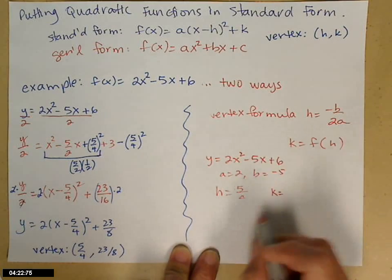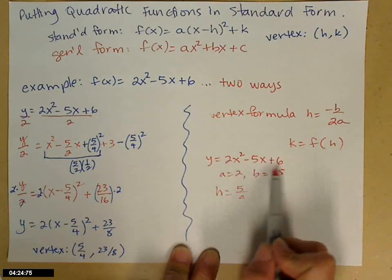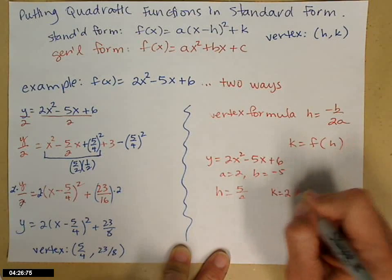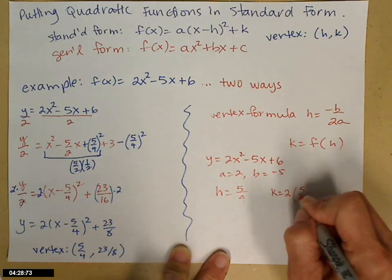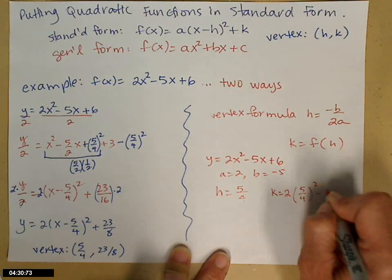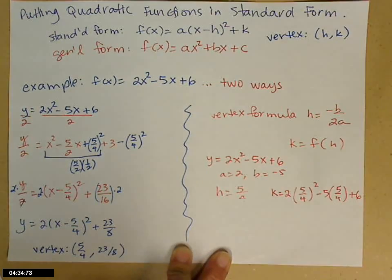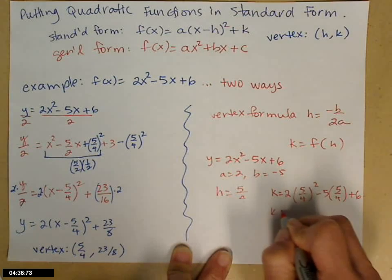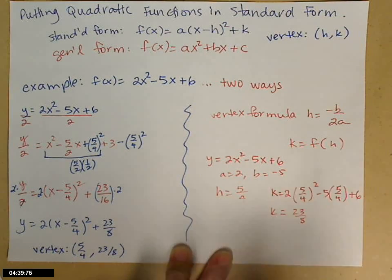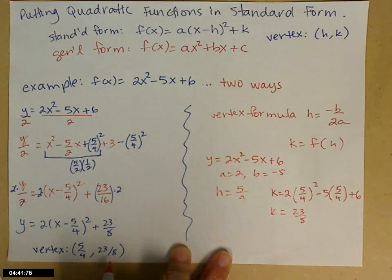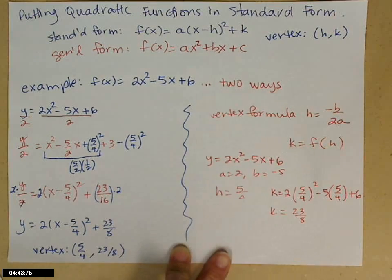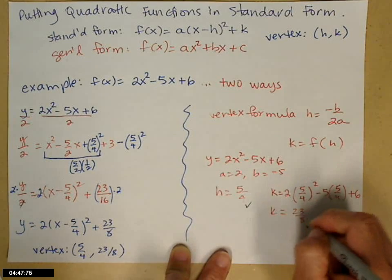To find k, I need to take 5 fourths and plug it into my function. So 2 times 5 fourths squared minus 5 times 5 fourths plus 6. I'm going to totally leave it to you to verify that that turns out to be 23 over 8. I know what my answer is supposed to be and I don't want to do the math right now. So I'm about ready to finish. I know h. I know k. I know a.